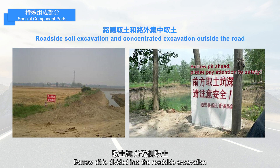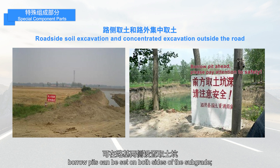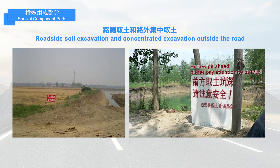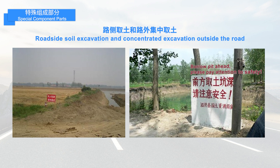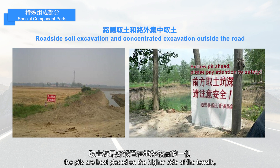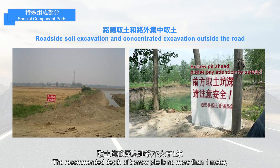Borrow pit is divided into roadside excavation and concentrated excavation outside the road. In areas where the ground cross slope is not steeper than 1 to 10, borrow pits can be set on both sides of the subgrade. For areas with a cross slope steeper than 1 to 10, the pits are best placed on the higher side of the terrain, so they can also serve as catchwater drains. The recommended depth of borrow pits is no more than 1 meter.